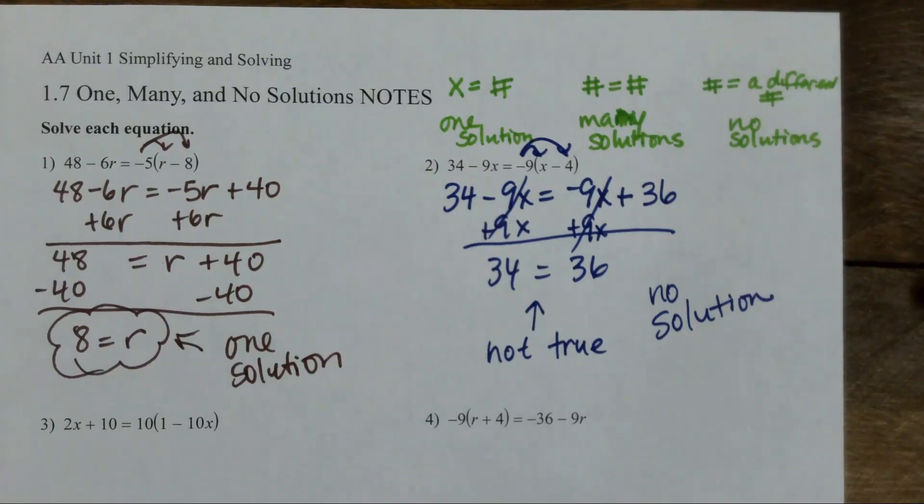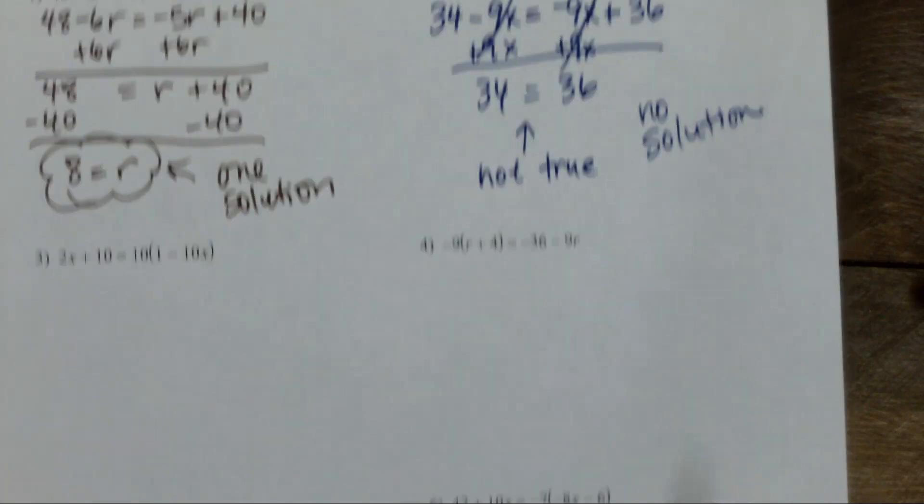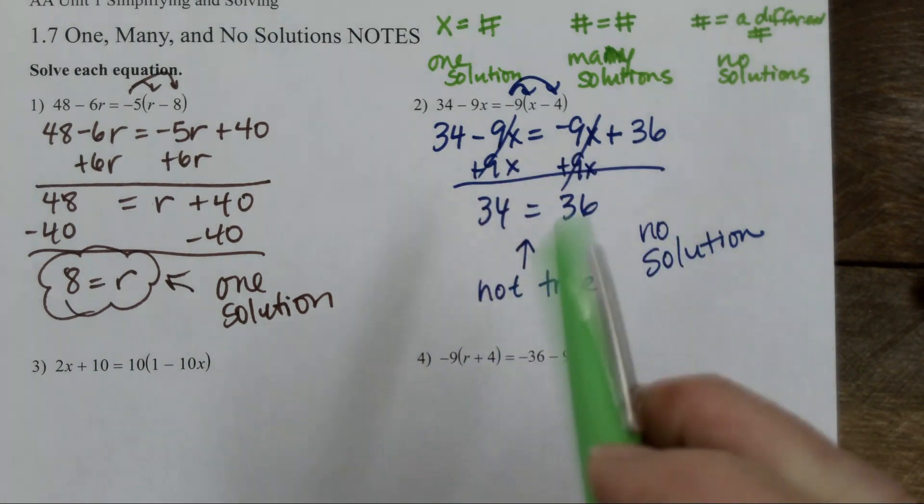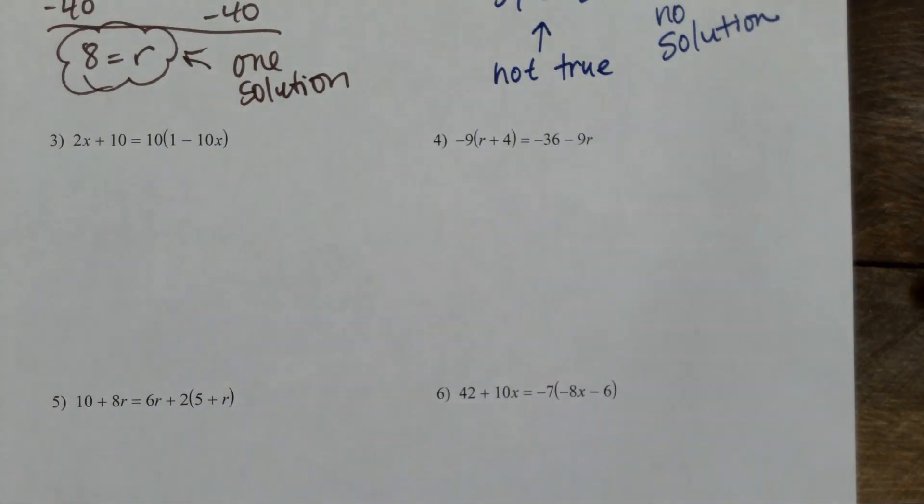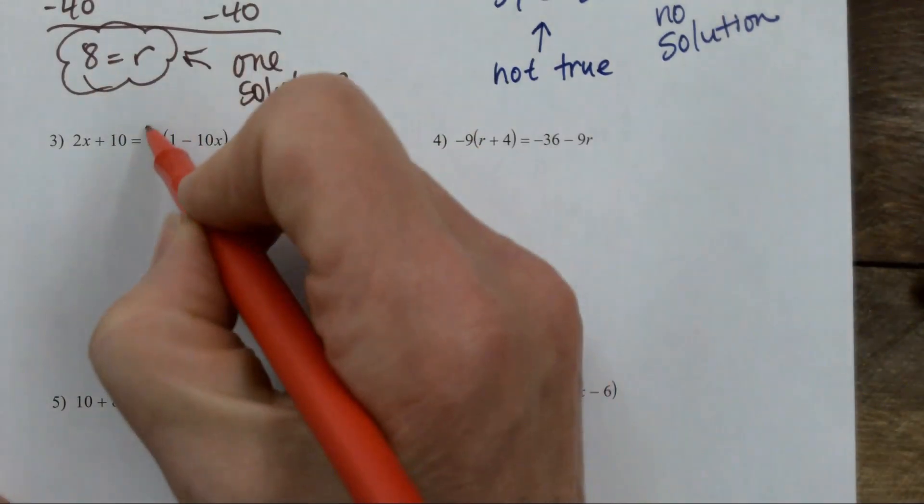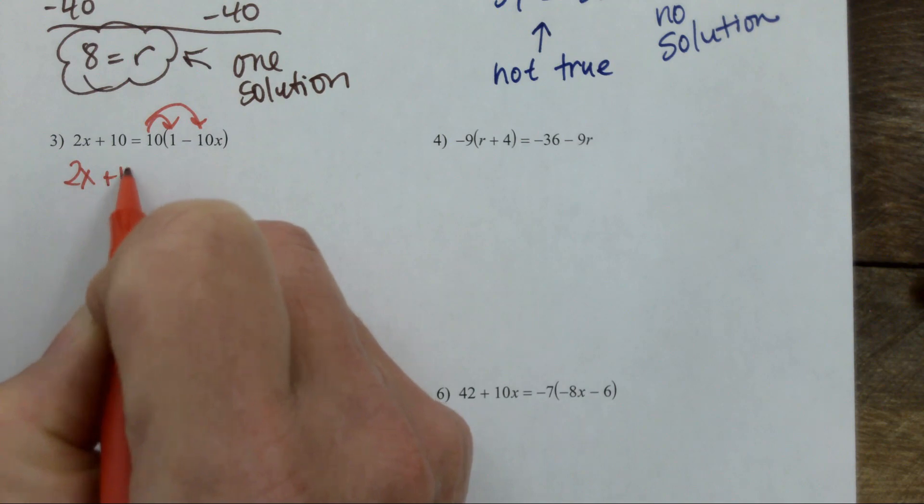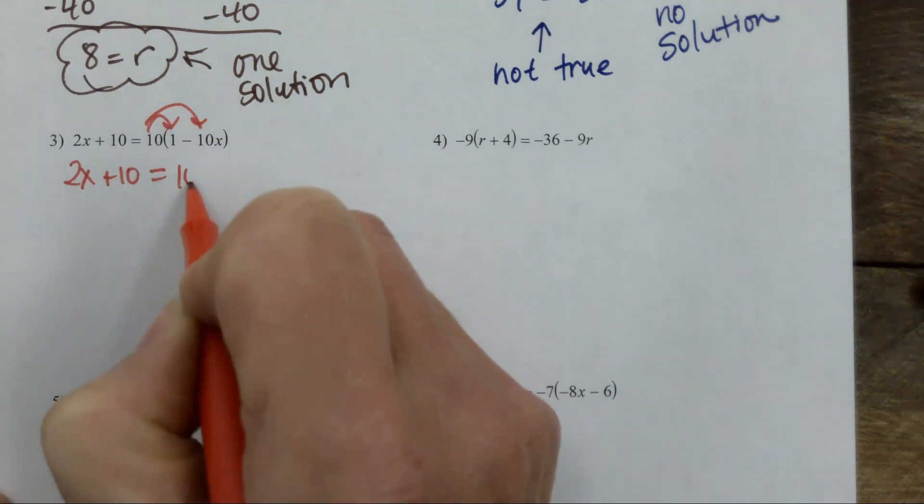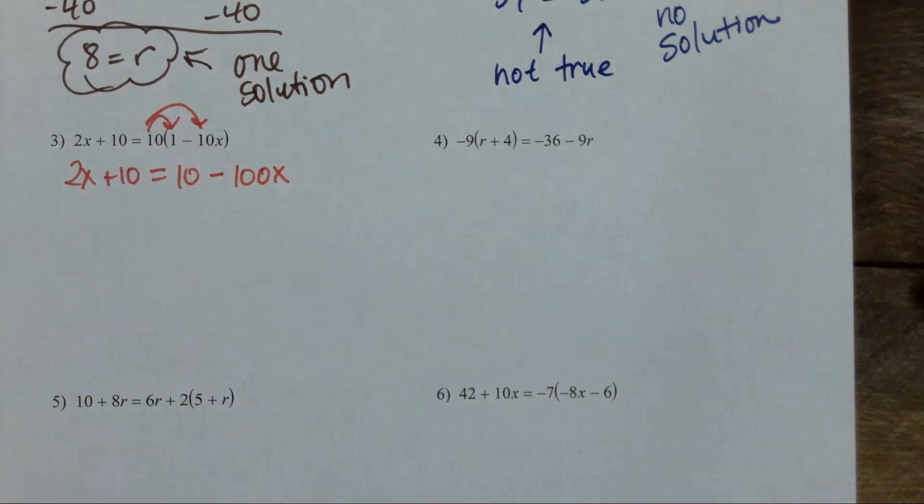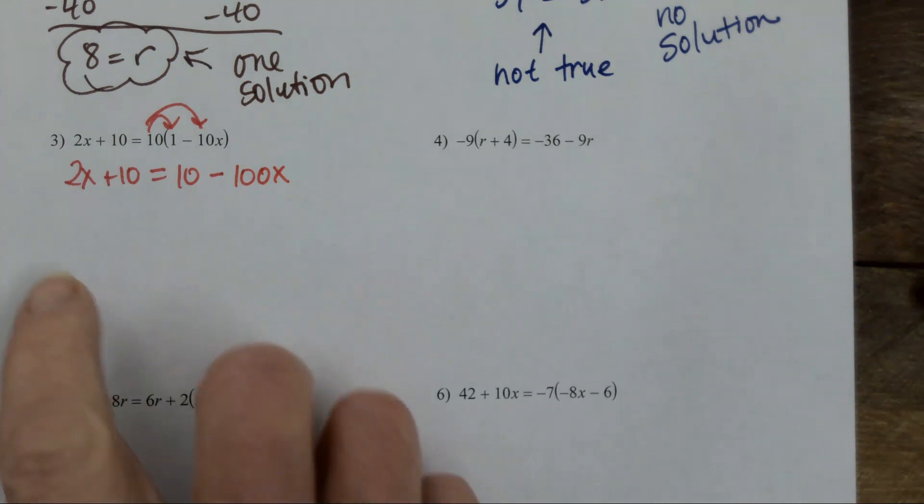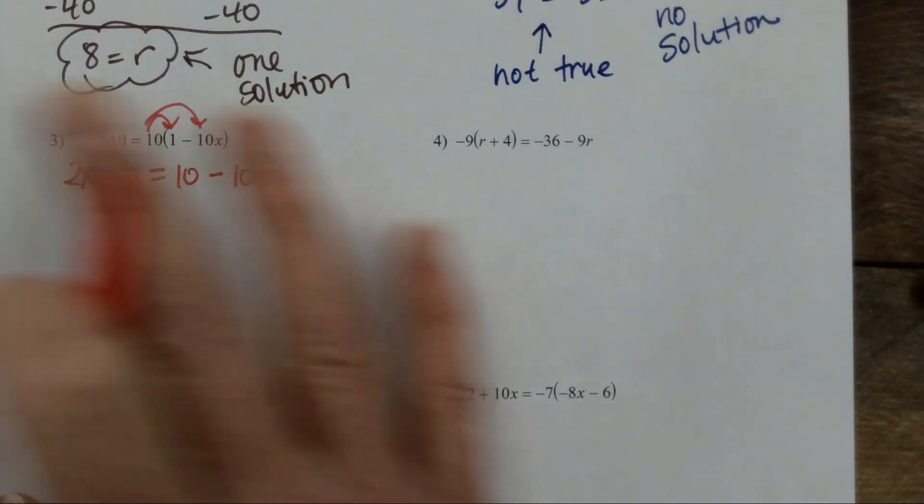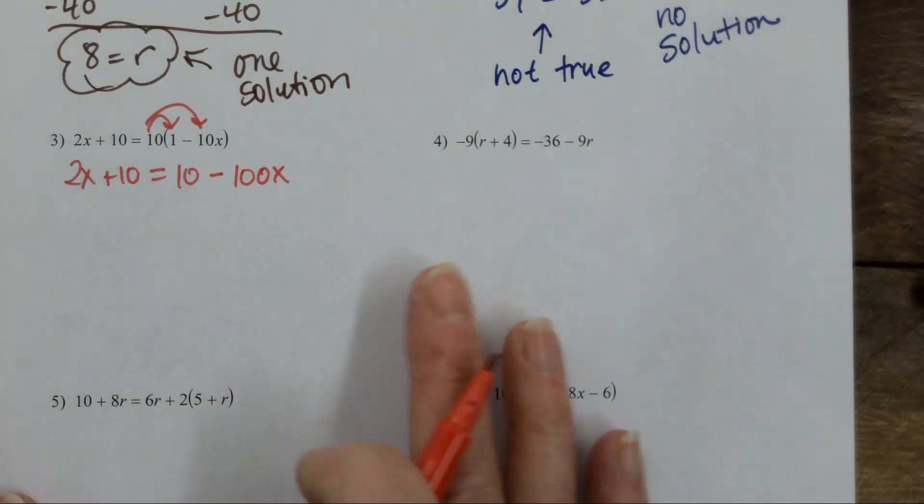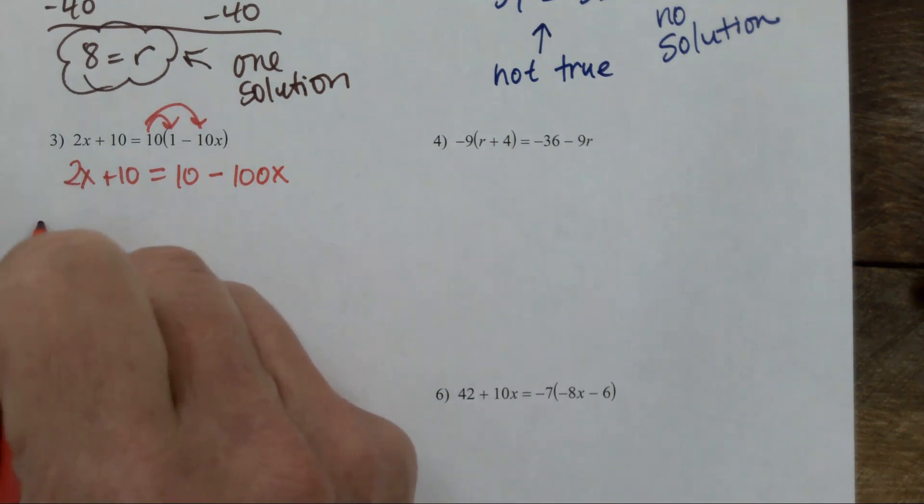Okay, look at that. Different looking variables. Let's move on. What do I do first? Distribute. Do my distributing: 2x plus 10 equals 10 minus 100x. That is a big one. Now what? Got to either subtract the 2x or add a 100x. Do we have a preference? The 2x is smaller.